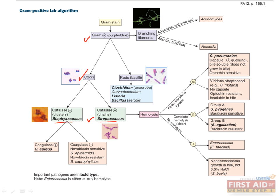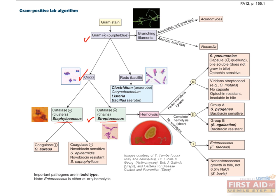Hemolysis is the breakdown of red blood cells in culture by hemolytic enzymes found in some strep species. There are three types of hemolysis. Alpha hemolysis results in a green ring around strep pneumoniae or viridans streptococci in blood agar — the green is from the color change in the agar due to peroxide produced by the bacteria. Beta hemolysis results in complete clearing around group A or group B strep, due to hemolysin production which completely lyses blood. Gamma hemolysis results in no clearing or hemolysis because hemolysin is not present.